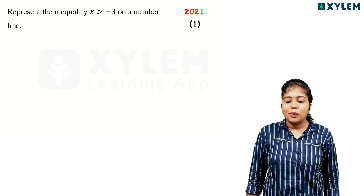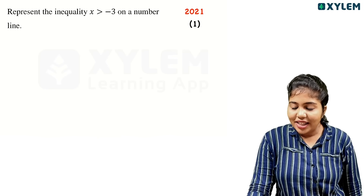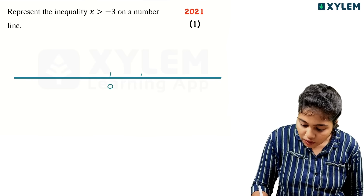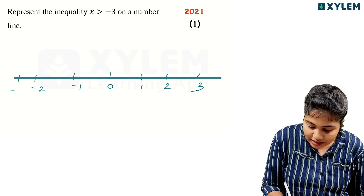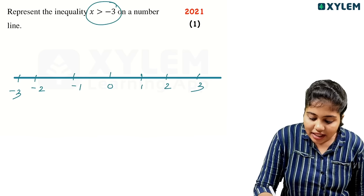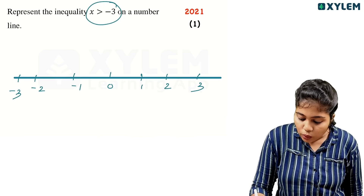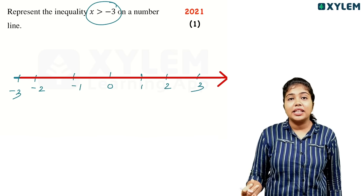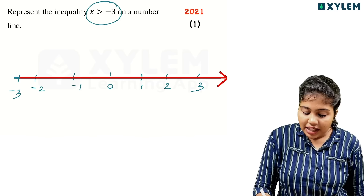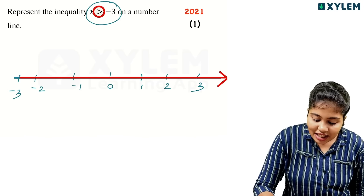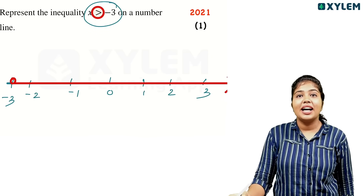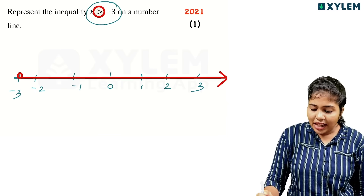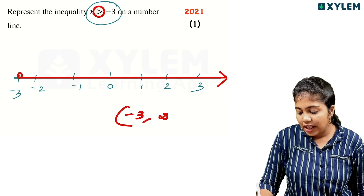Represent inequality x greater than minus 3 on the number line. We mark 0, 1, 2, 3 and minus 1, minus 2, minus 3. x is greater than minus 3, so values like 0, 2 are included. At minus 3, because it's strictly greater than, it's not a dark circle — it's a hollow circle. The arrow points right from minus 3.